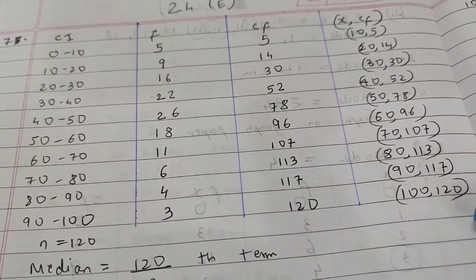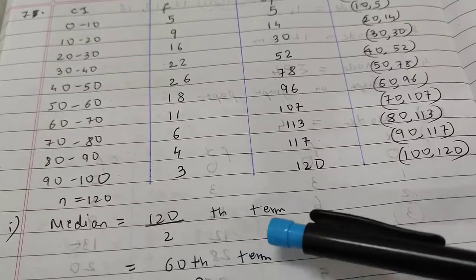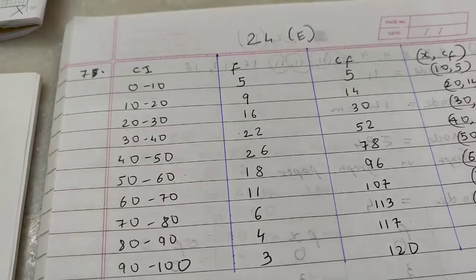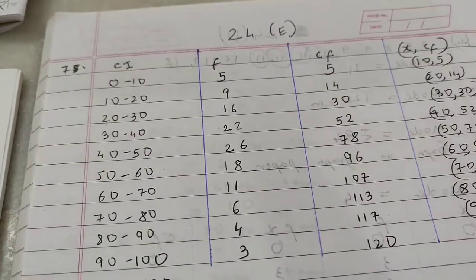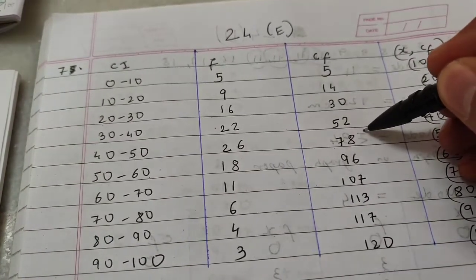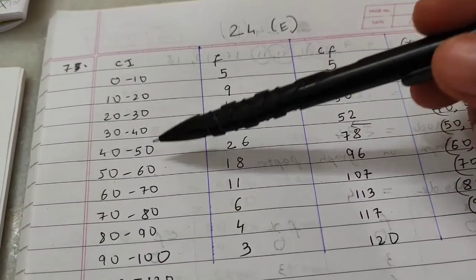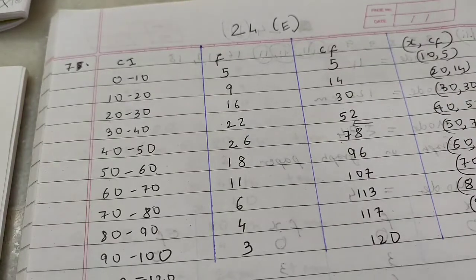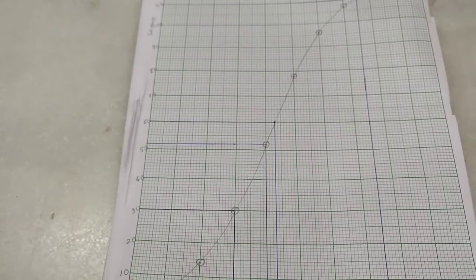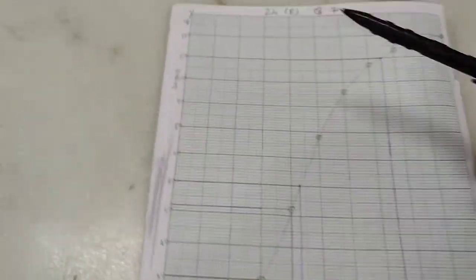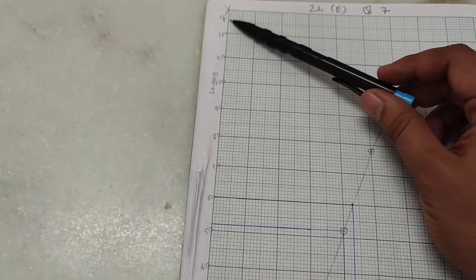N value is 120, so the 60th term will be the median which we have to find with the help of the ogive. Looking at the table, we know that the 60th term is somewhere here, so it would be between 40 and 50, but we need an exact value using the ogive. So this is the ogive.